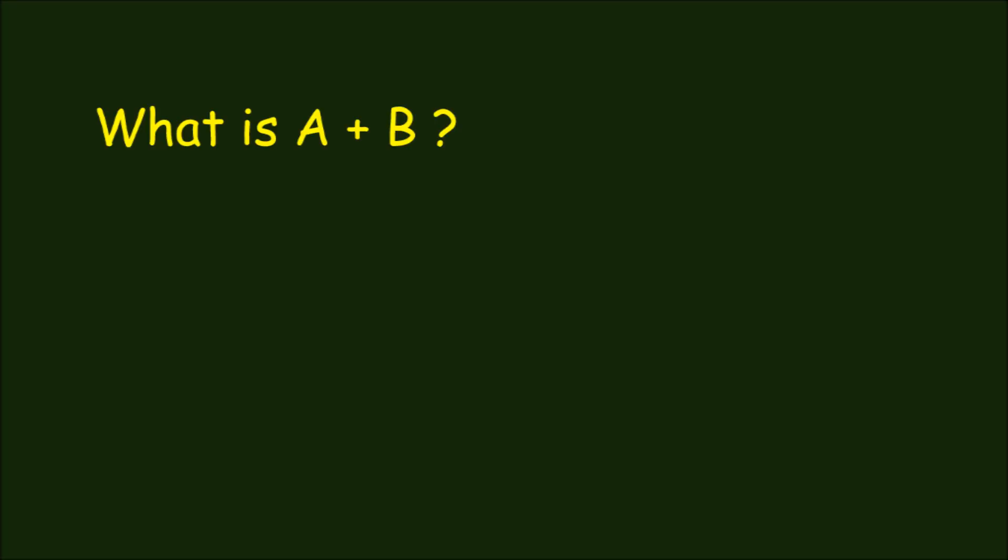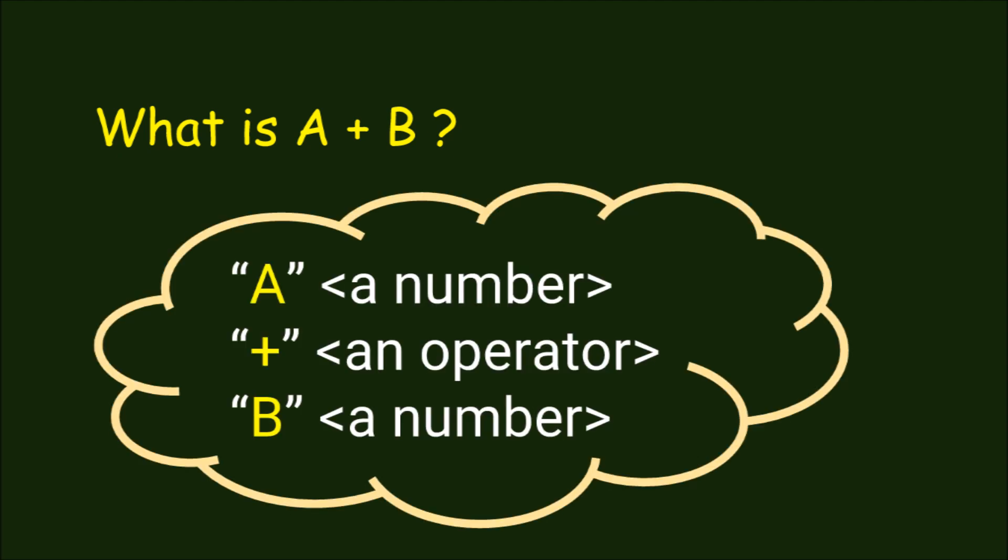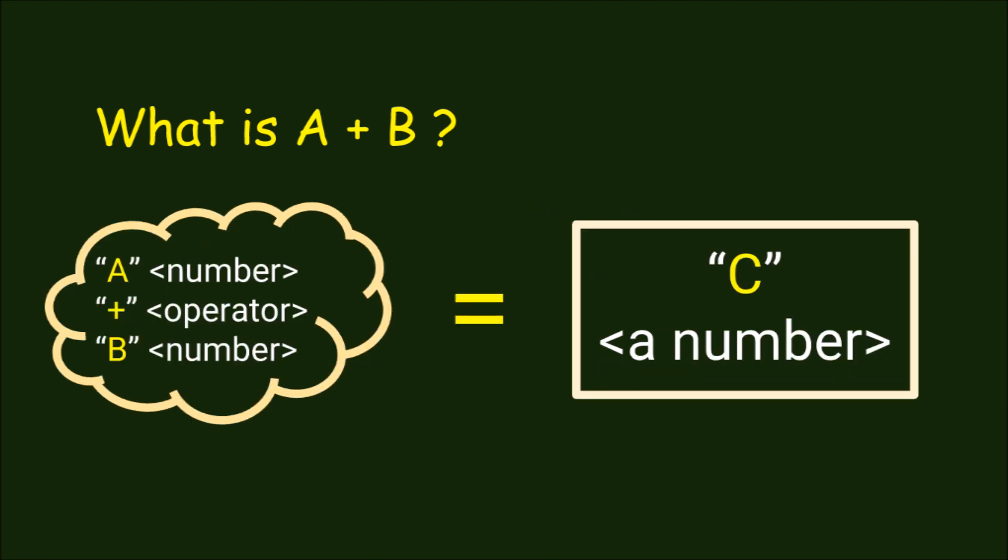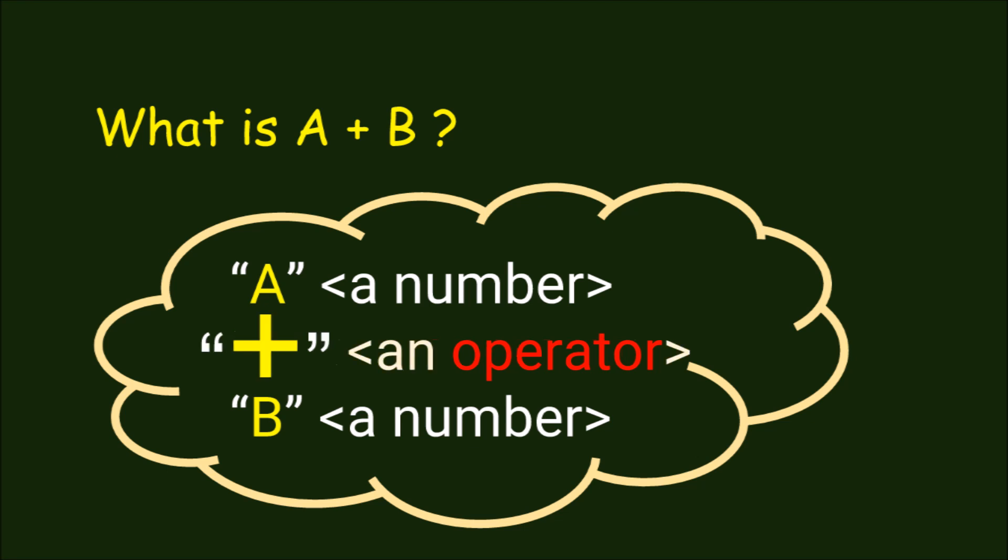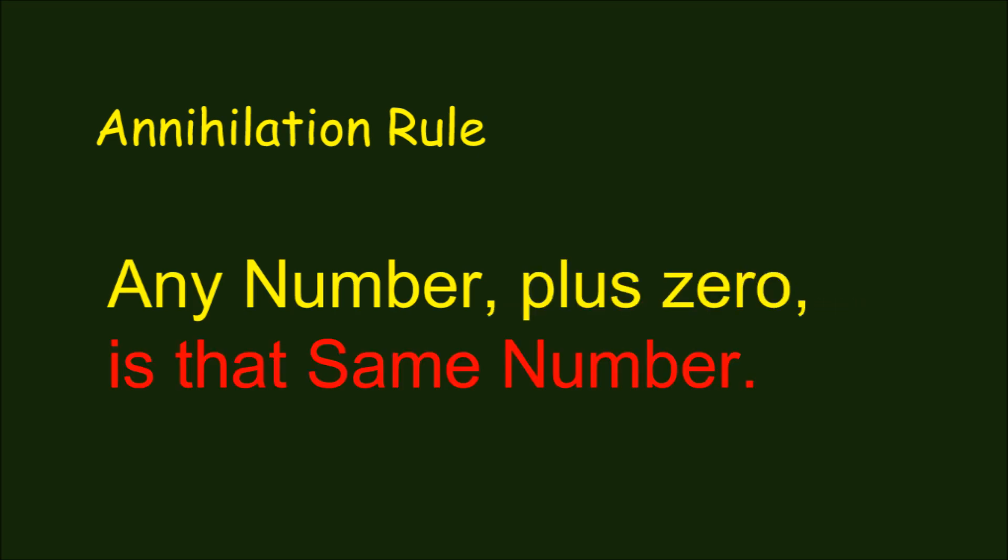When we ask what is a plus b, what we mean is that we have a composite value that we've written as the sum of two numbers, and we want to rewrite that as a single number that has the same value. To get rid of an operator, the plus, we use something called an annihilation rule. For addition this rule is simple, any number plus zero is that same number.